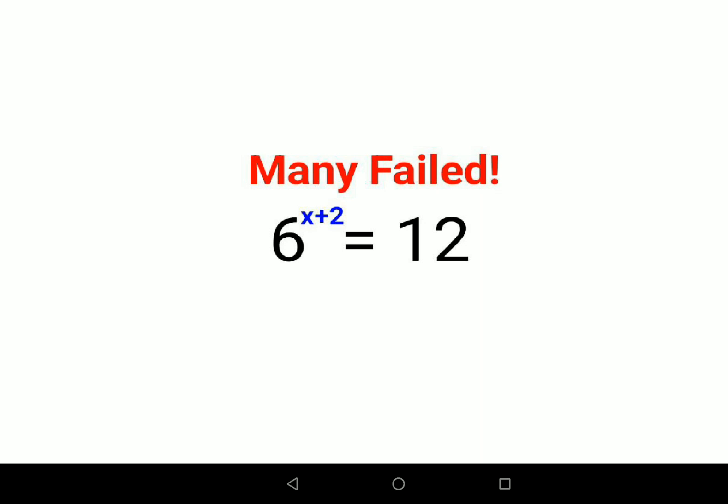Here what we can do is we'll keep the 6 raised to x plus 2 as it is, and the 12 we'll write as 2 into 6. We'll rewrite your RHS as 2 into 6.